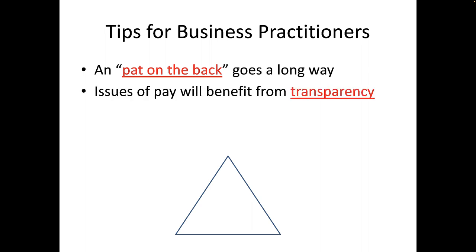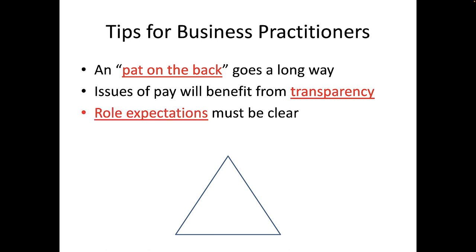Second, firms should be clear and transparent about pay. Pay secrecy is rarely a good idea, and some states have now outlawed it. Even if it is a so-called secret, it's not really a secret — employees talk and find out who makes what. Nothing breeds animosity and contempt like secrecy and gossip. If your pay system is fair, there should be nothing to hide. Third, managers must make sure that role expectations are clear and promises are kept. If someone is not sure what their job entails or doesn't know the performance goal, there will be a breakdown in expectancy and instrumentality.